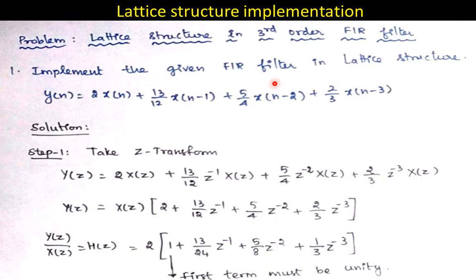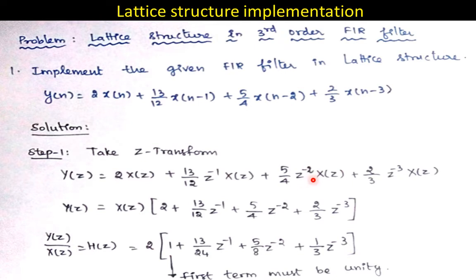Here is the problem: implement the given FIR filter in lattice structure. Y(n) = 2x(n) + (13/12)x(n-1) + (5/4)x(n-2) + (2/3)x(n-3). Step one: take the Z-transform. Y(z) is written from the difference equation by substituting delays as powers of z⁻¹. Taking x(z) as a common factor and rearranging gives H(z) = Y(z)/X(z).